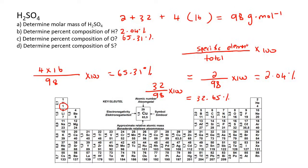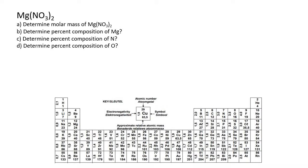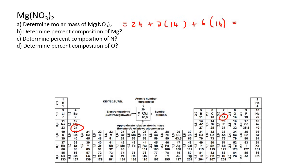Let's do another example with magnesium nitrate, Mg(NO₃)₂. Determine the molar mass: one magnesium is 24, two nitrogens so 2 times 14, and six oxygens total — because there are three oxygens but multiplied by two — so 6 times 16. Calculate that and you get 148 grams per mole. That is our total.